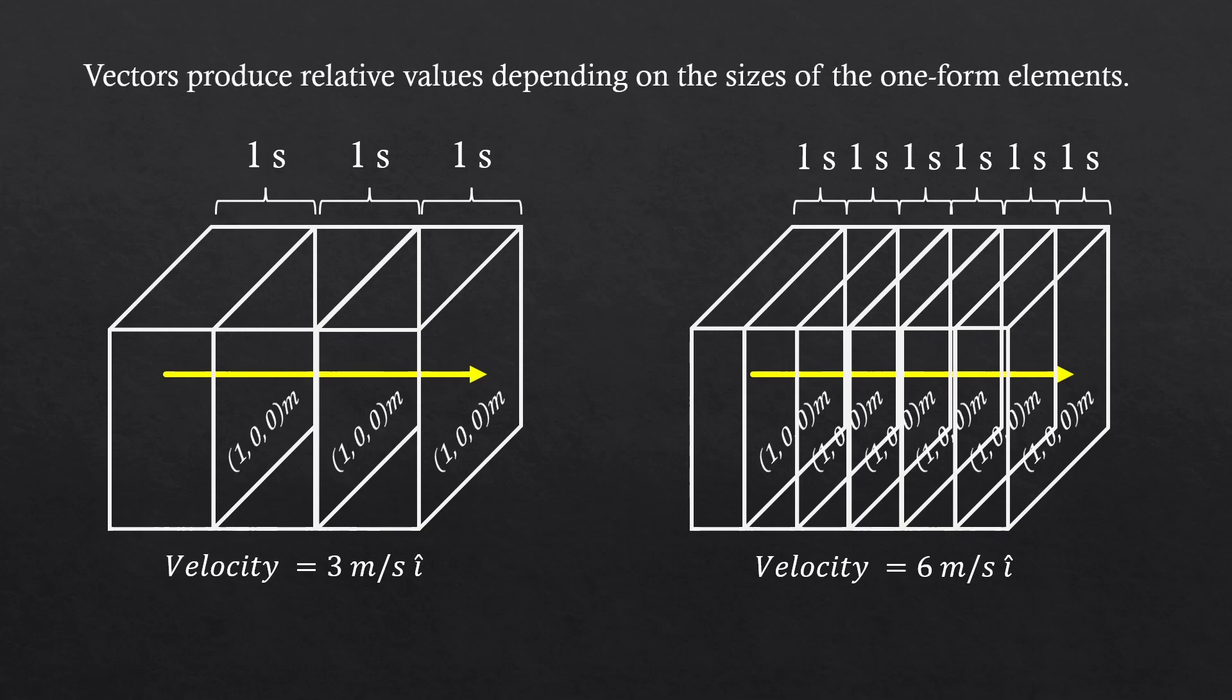So, we can say that vectors produce relative values depending on the sizes of the one-form elements. And by the way, force-spacetime dual vector could be expressed like this.